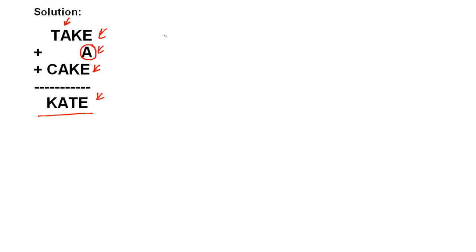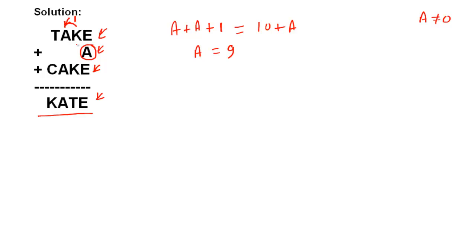Looking at the thousands column: A + A = A (with possible carry). A cannot be zero since it leads the number CAKE. From the thousands column, carry can only be 1 (adding two digits). So A + A + 1 = 10 + A, which gives A = 9. Check: 9 + 9 + 1 = 19, write 9 carry 1. So A = 9.